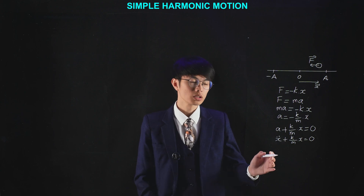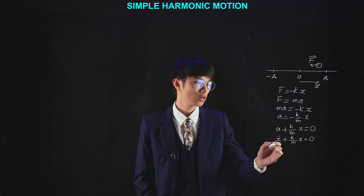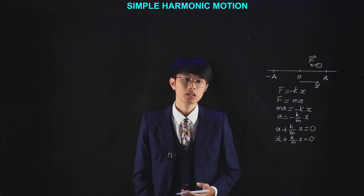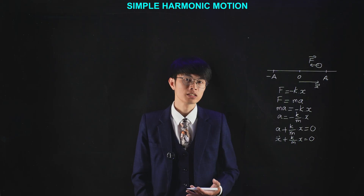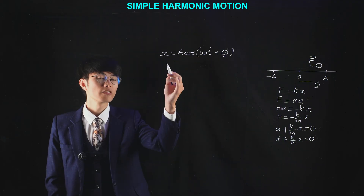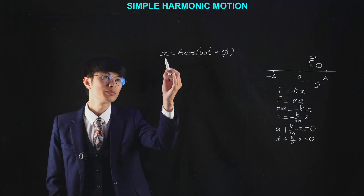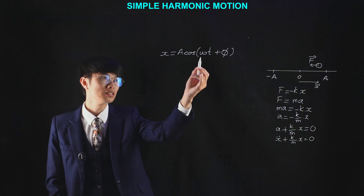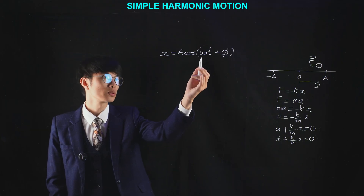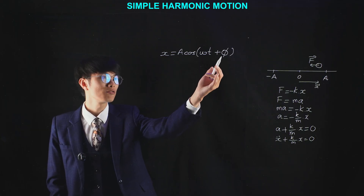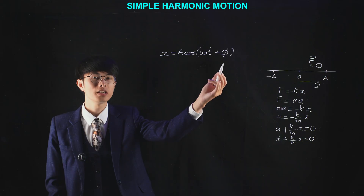The solution for this kind of equation is sine and cosine functions. So the position as a function of time can be written as: x is the position, A is the amplitude, omega is the angular frequency, t is time, and phi is the phase angle.